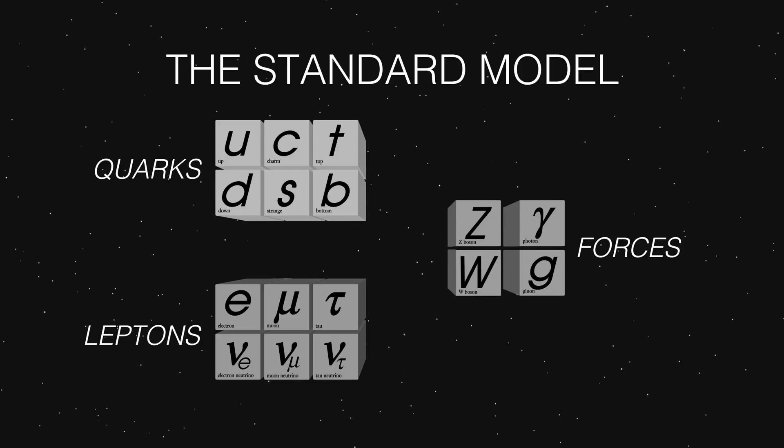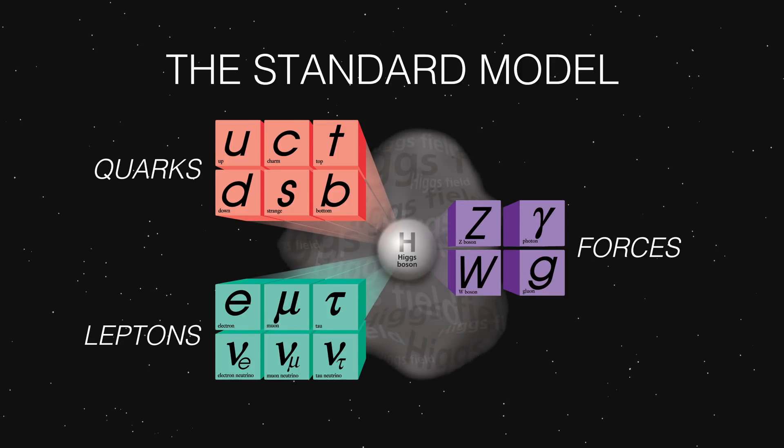The Standard Model of particle physics explains the subatomic world of molecules and atoms as being built of twelve even smaller particles called quarks and leptons. Those particles are the smallest known building blocks of the cosmos, and they are governed by four forces, called the strong and weak nuclear forces, electromagnetism, and gravity. Finally, a ghostly field called the Higgs field gives mass to some of those particles and completes the theory.